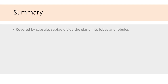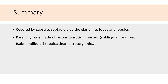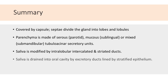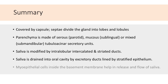To quickly recap: major salivary glands are covered by a capsule, and septa divide the gland into lobes and lobules. The parenchyma is made of serous acini in the parotid gland, predominantly mucous acini in the sublingual gland, and a mix of serous and mucous acini in the submandibular gland. Saliva is modified by the intralobular intercalated and striated ducts, and drained into the oral cavity by a series of excretory ducts of larger size lined by different types of stratified epithelium. Myoepithelial cells are found inside the basement membrane around the serous acini and proximal ducts and help in the release and flow of saliva.